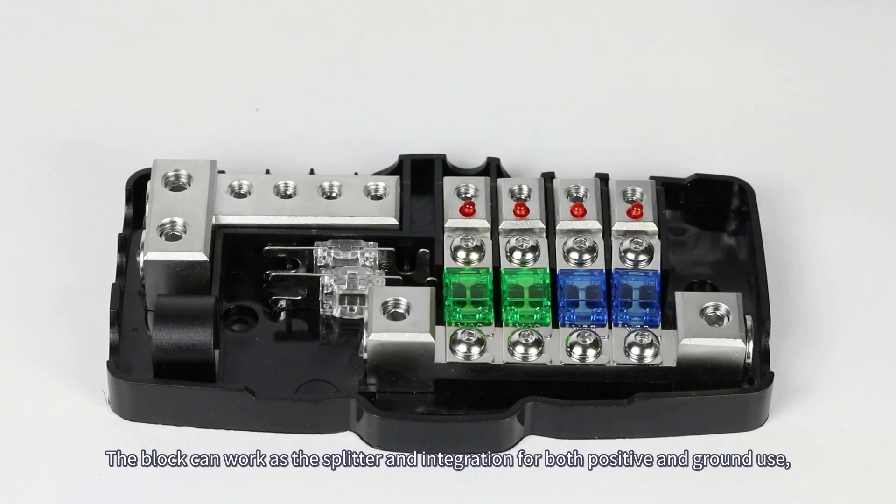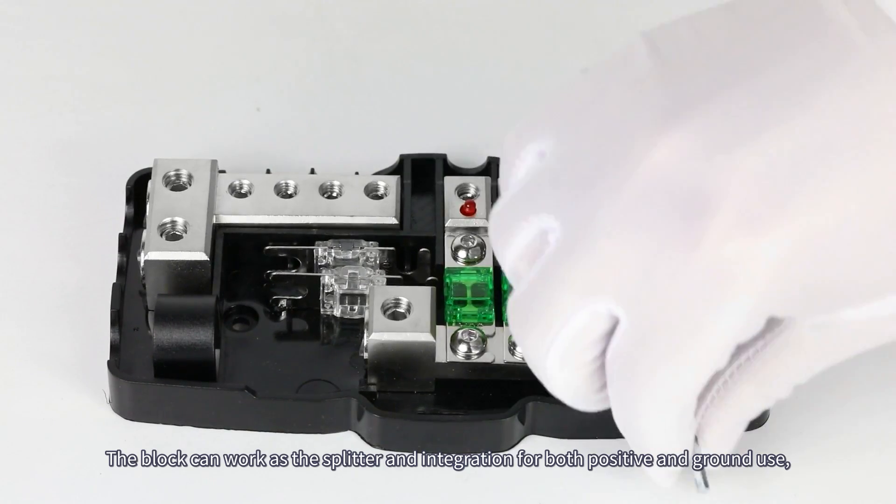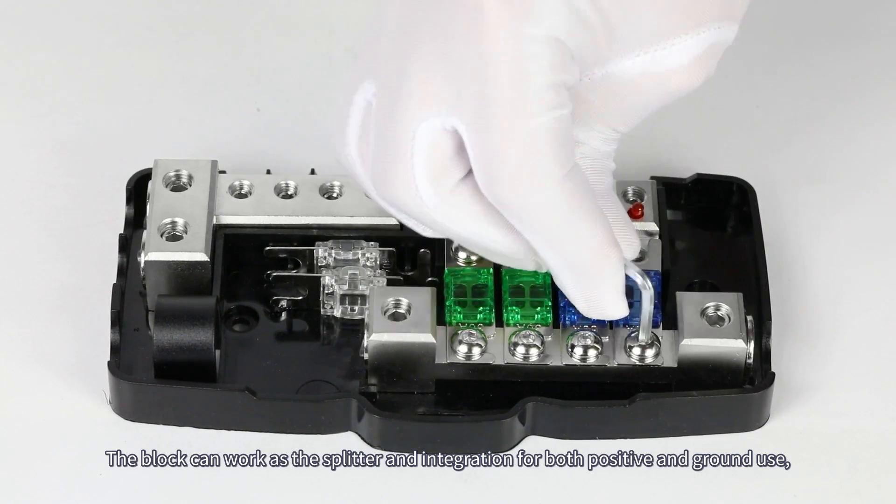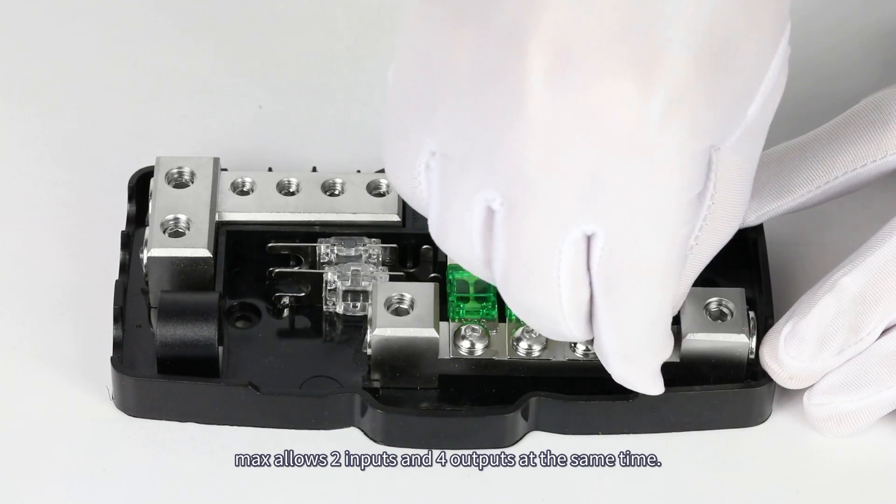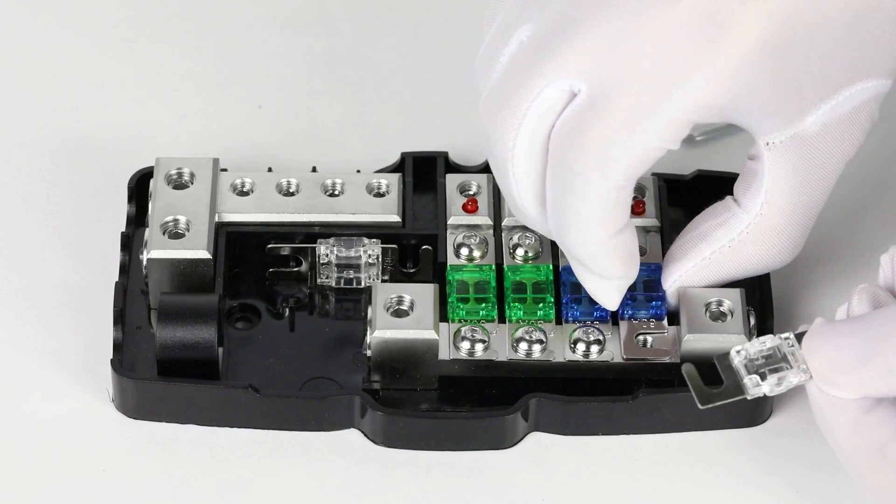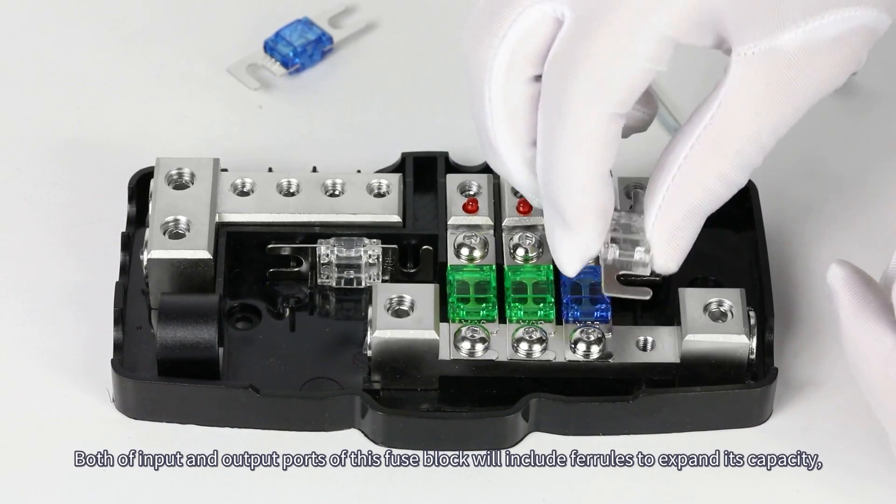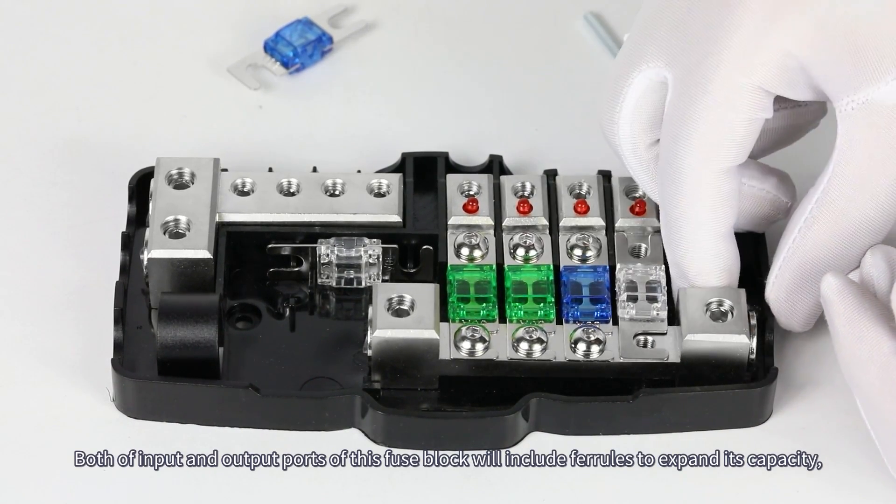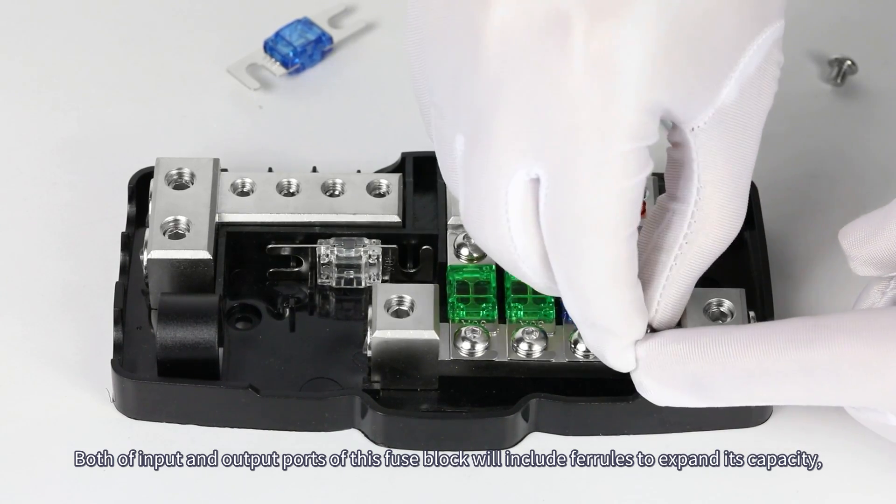The block can work as the splitter and integration for both positive and ground use. Max allows 2 inputs and 4 outputs at the same time. Both input and output ports of this fused block will include ferrules to expand its capacity.